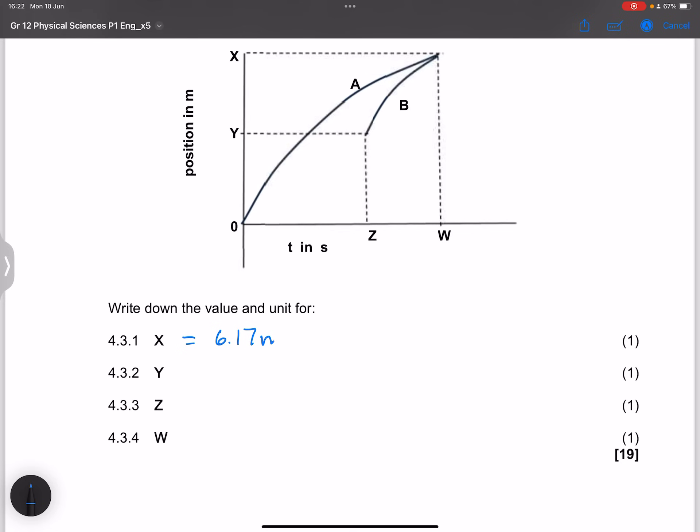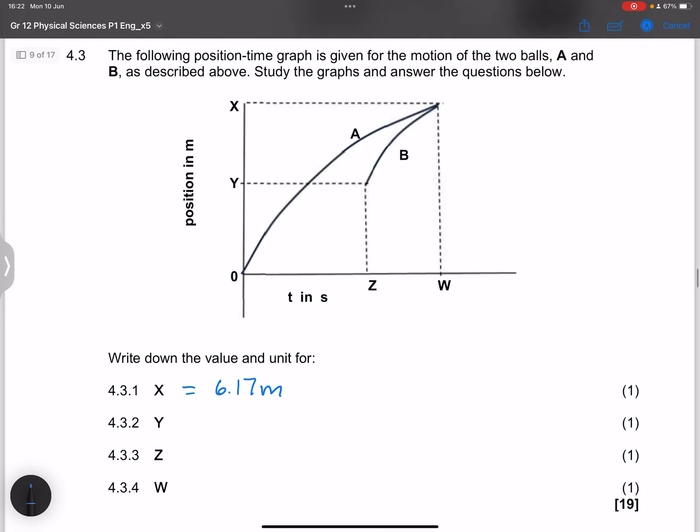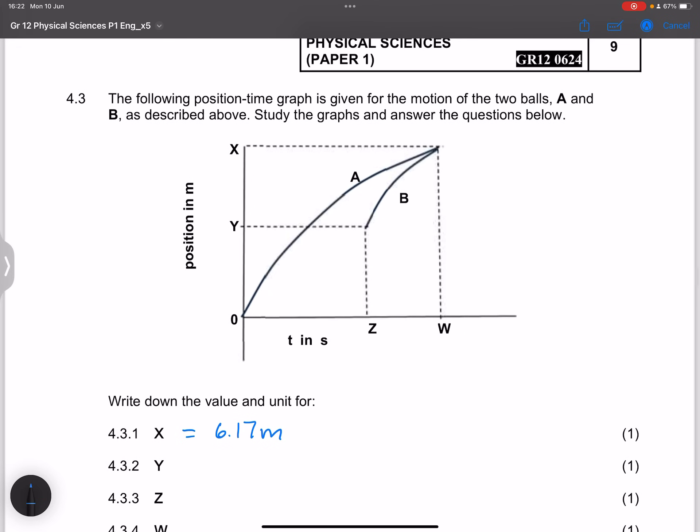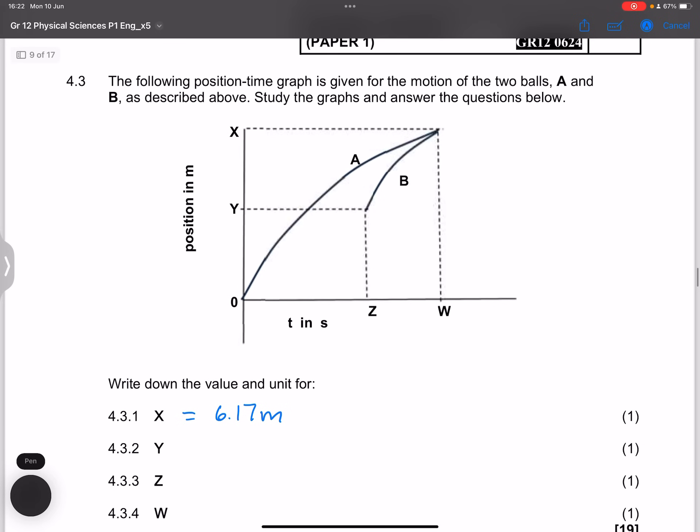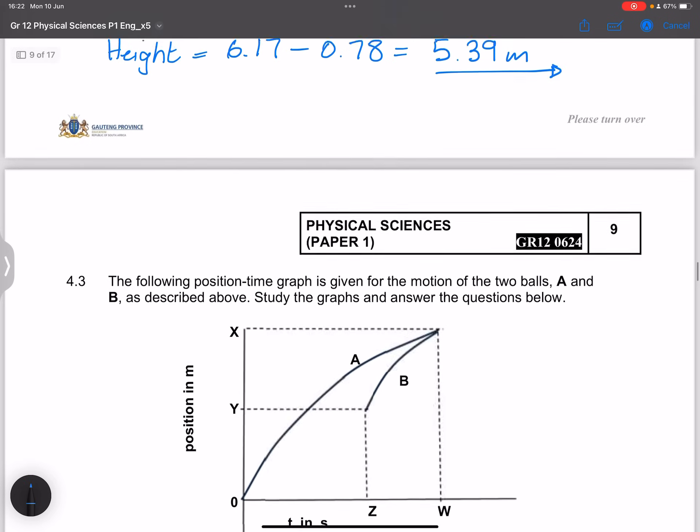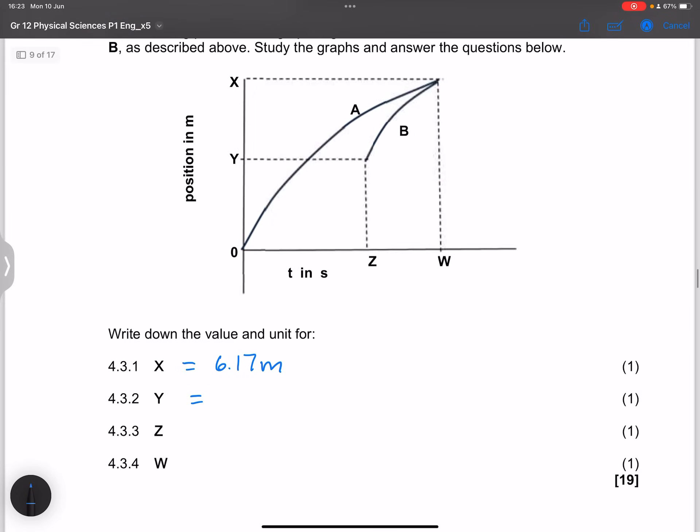They say write down the value and unit for X. Now X would be the maximum height for A. We found that to be 6.17 so X would be 6.17 meters. Remember they said they wanted the unit as well. And Y, so Y would be the height of the building. Remember this is where we threw, we started throwing B from. And we found that to be 5.39, that's also in meters.